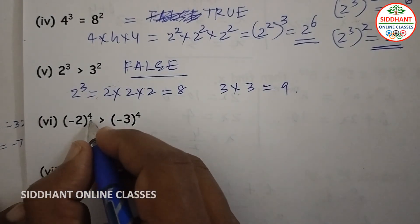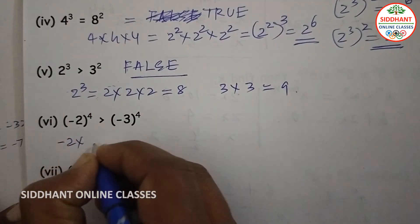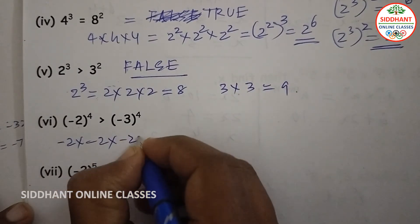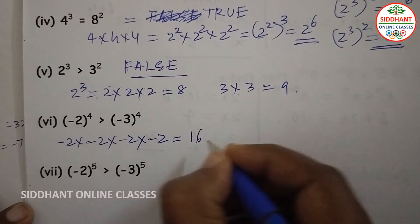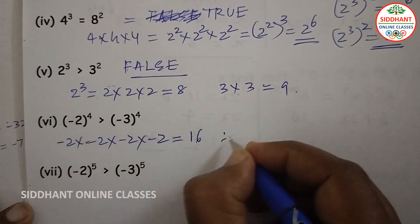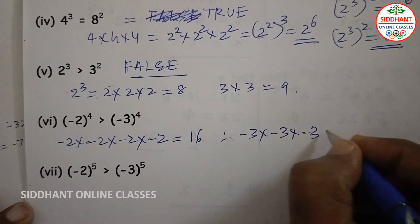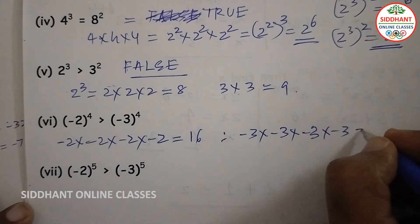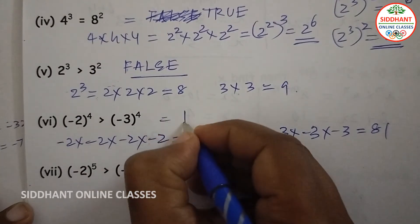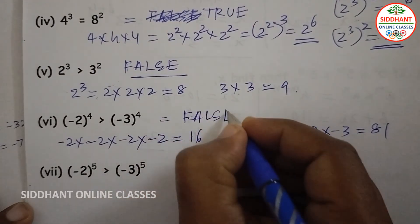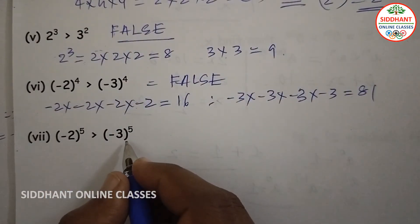Sixth statement: (-2) to the power of 4 is greater than (-3) to the power of 4. Calculating: (-2)^4 equals (-2) times (-2) times (-2) times (-2), which gives 4 times 4, that is 16. And (-3)^4 equals 9 times 9, that is 81. Since 16 is less than 81, the statement is false.